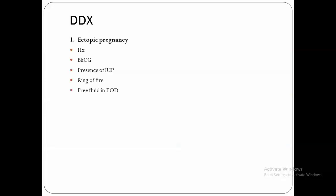The differential diagnoses include, on top of the list, ectopic pregnancy. It is sometimes difficult to differentiate between ectopic pregnancy and corpus luteal cysts on ultrasound. We must correlate with history, beta-hCG level, presence of an intrauterine pregnancy, ring of fire in both, and significant free fluid in the pouch of Douglas. Endometrioma has a typical picture but can sometimes be difficult to differentiate, and MRI may be needed.